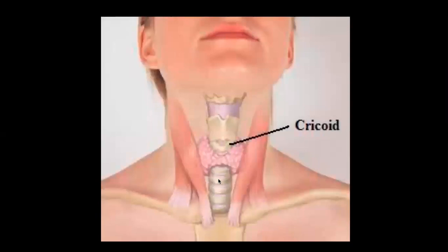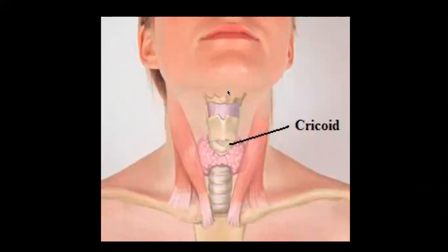Now let us understand the midline structures of the neck. We start from the mental protuberance. Removing skin and fascia, we see the median fibrous raphe — a thickened ligament into which both sides of the muscles forming the floor of the oral cavity, the mylohyoid muscles, are attached. The median fibrous raphe ends at the body of the hyoid bone.